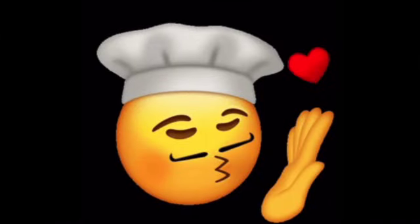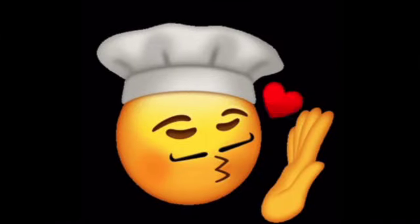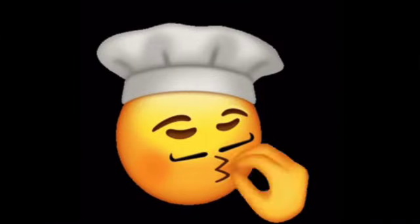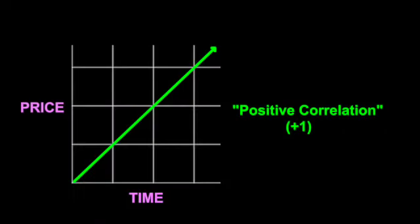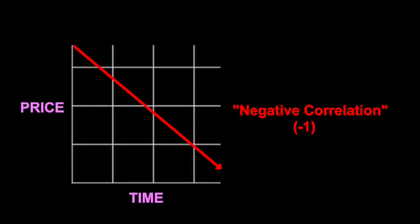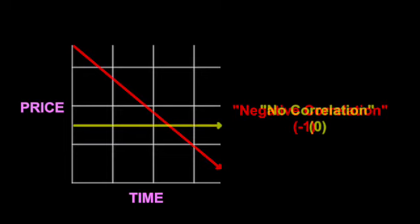In the article, correlation is described through the lens of a perfect trend by comparing price if plotted as a straight line. Positive price is a positive slope with a plus one correlation. If price has a negative slope, the correlation is negative one. And if price is sideways, then there is no correlation.